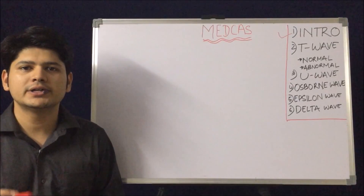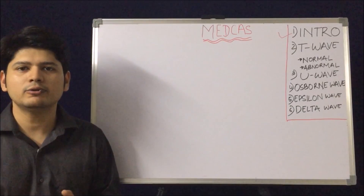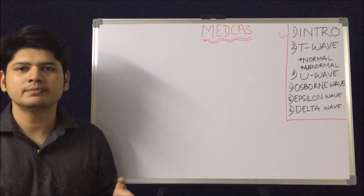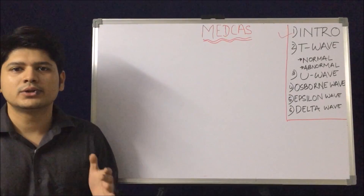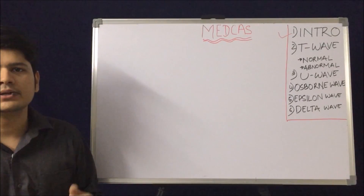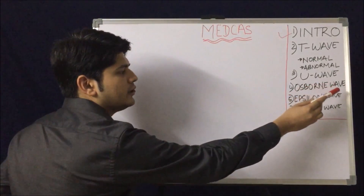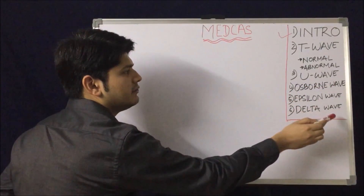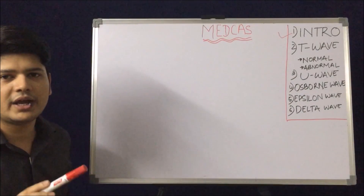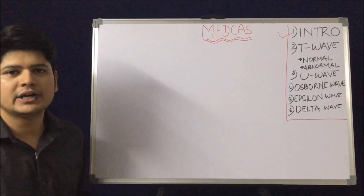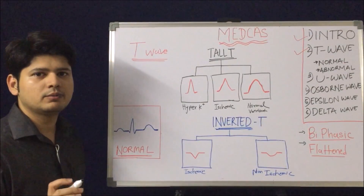In the last ECG video we understood about the P wave and QRS wave — P wave for atrial depolarization and QRS wave for ventricular depolarization. Today the topic of discussion will be the T wave, U wave, and other waves like Osborne wave, Epsilon wave, and Delta wave. We will understand the physiology of each wave and how it helps in diagnosis. So today we are starting with the T wave.